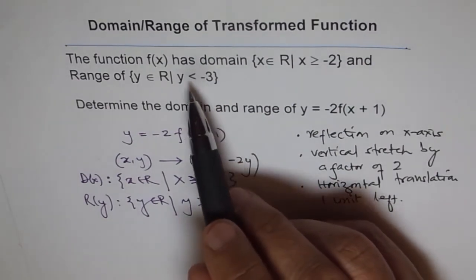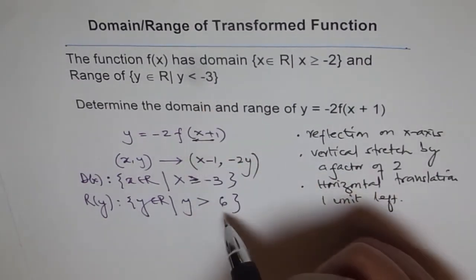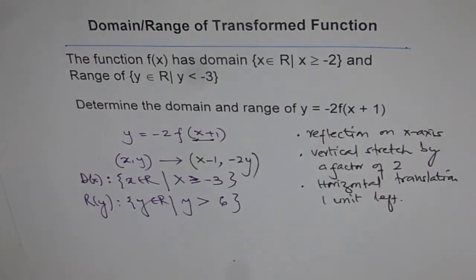So instead of y < -3, it becomes y > 6. Whenever you multiply an inequality by a negative number, you need to flip the inequality sign. The range becomes y ∈ ℝ where y > 6. That's how the function is transformed. Thank you.